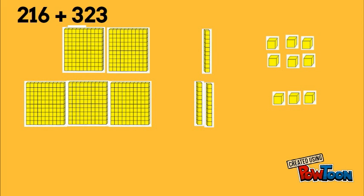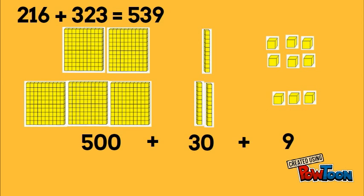And now we can simply add all our place values up to get our answer. So if we start with our 1's, we see we have 9 ones. And in our 10's we see we have 3 tens which is 30. And then we have 5 hundreds. So now we have 500 plus 30 plus 9, which gives us 539 as our answer.